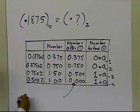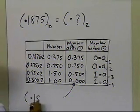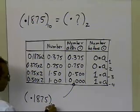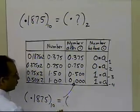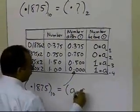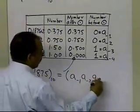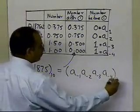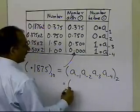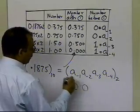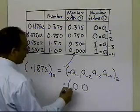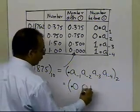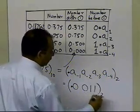I label these: a sub-minus-1, a sub-minus-2, a sub-minus-3, and a sub-minus-4. So the equivalent of 0.1875 in base 10 equals a_{-1}, a_{-2}, a_{-3}, a_{-4} in base 2, which gives us 0.0011 in base 2.